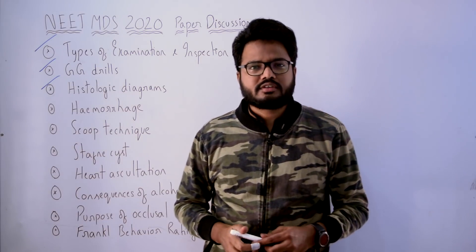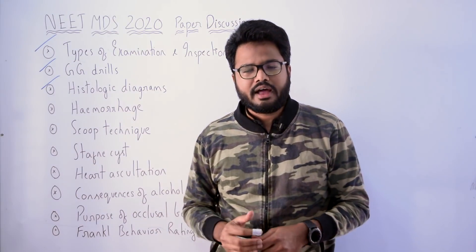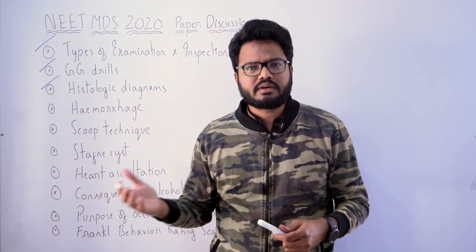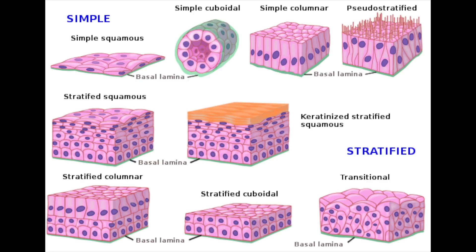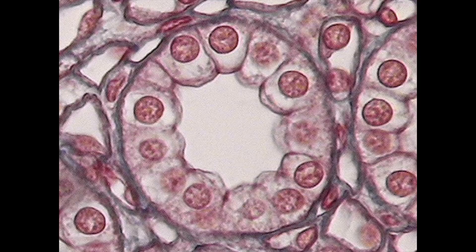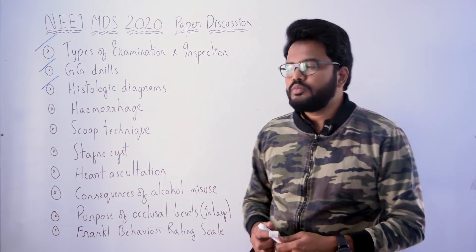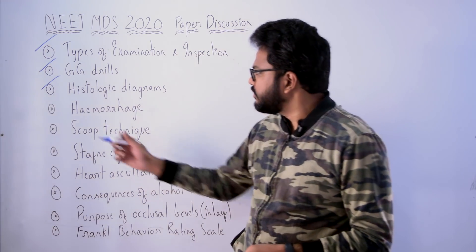Moving on to the next question — there was an image on the histologic aspect of some kind of epithelium. You can review some illustrations. As you can see, we have different types of epithelium, and this is how simple cuboidal epithelium appears.